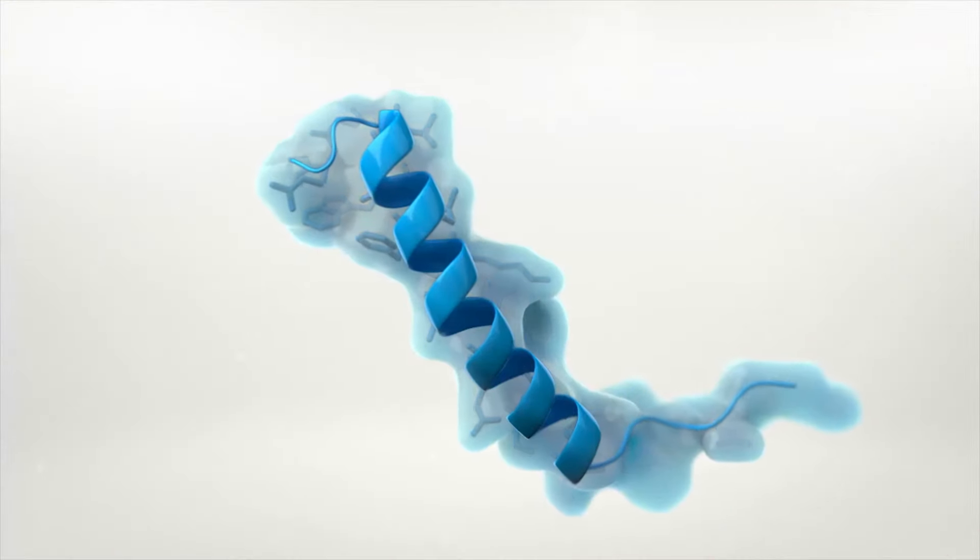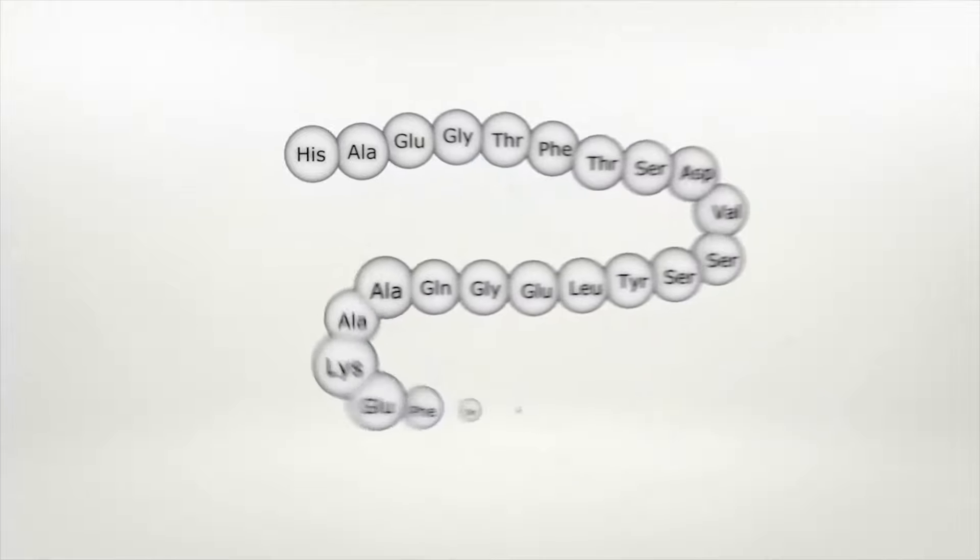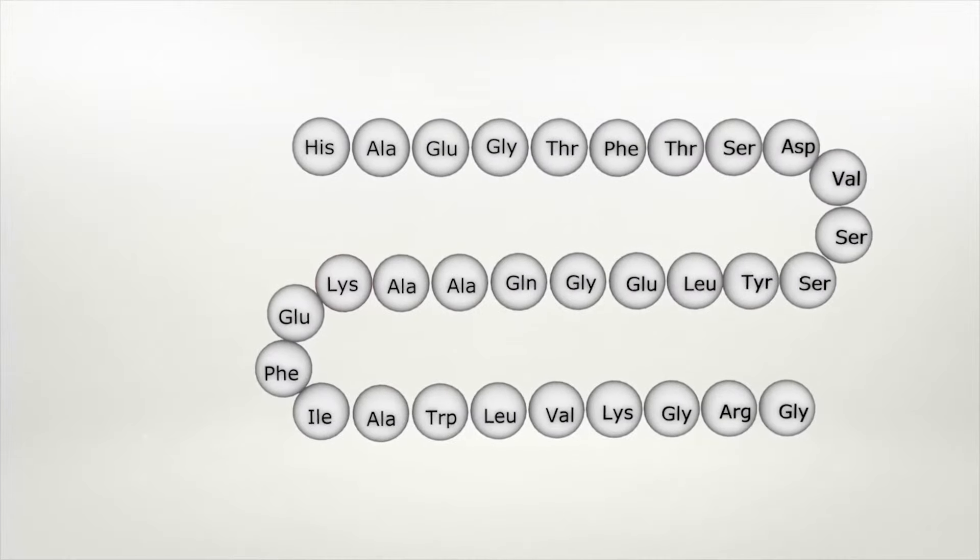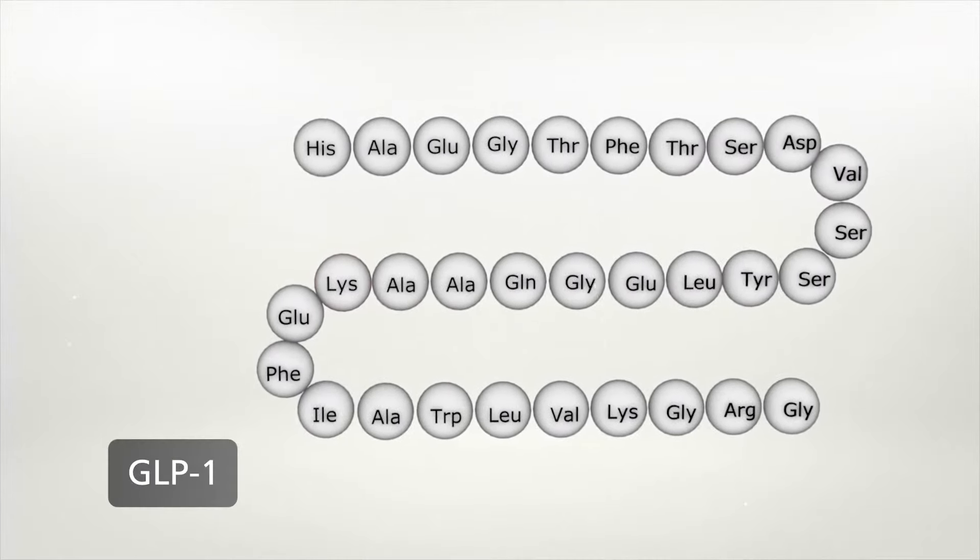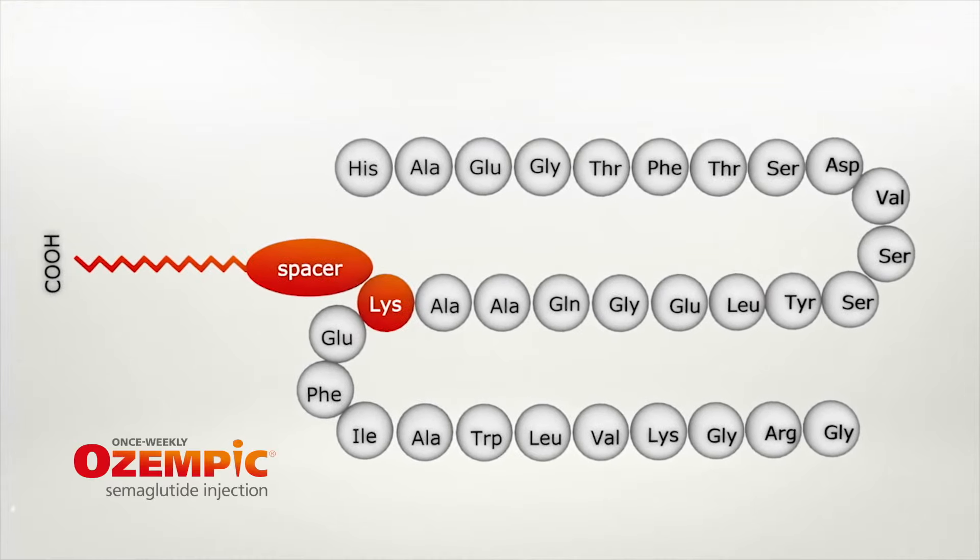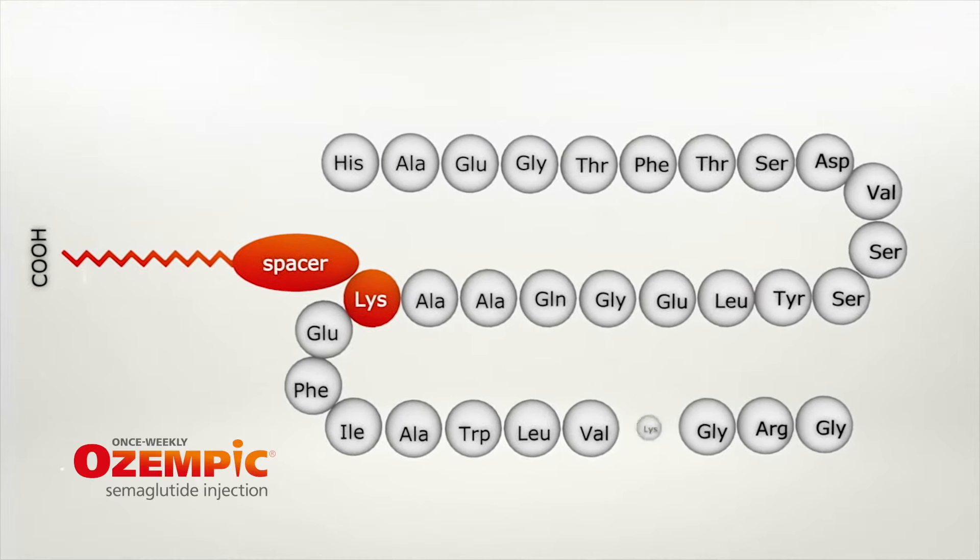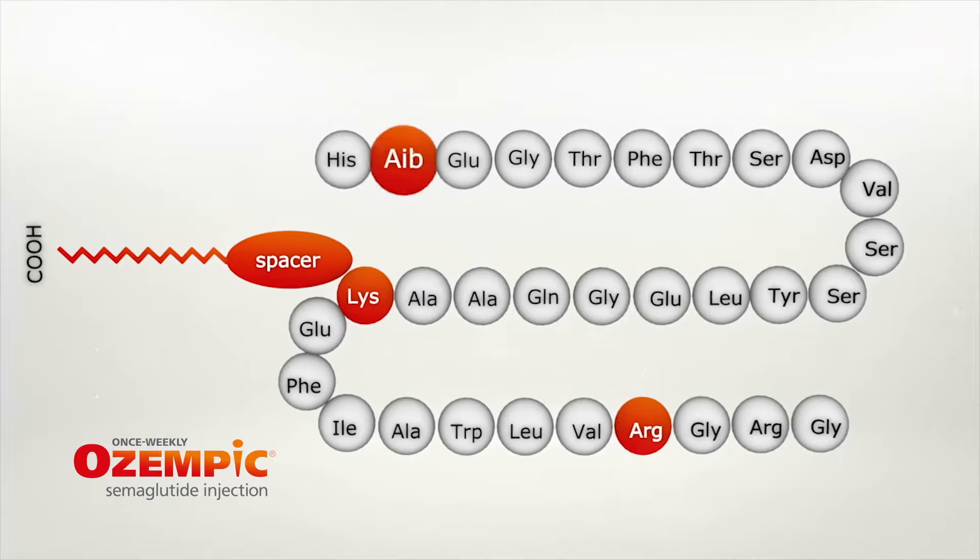Ozempic has a low molecular size with 94% similarity to the amino acid sequence of native human GLP-1 and three key modifications: the addition of a fatty diacid chain with a spacer and two amino acid substitutions.